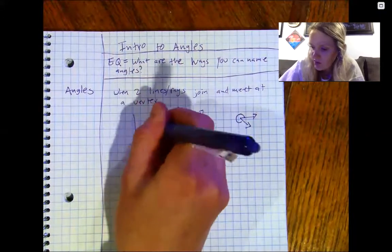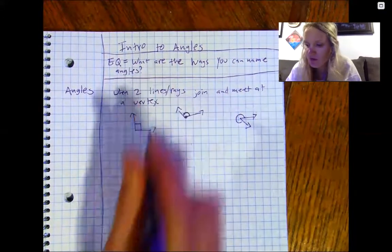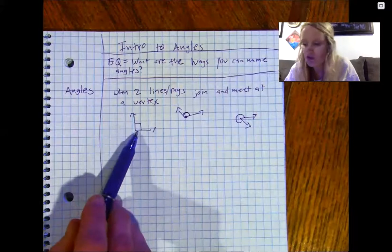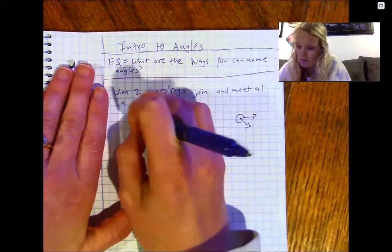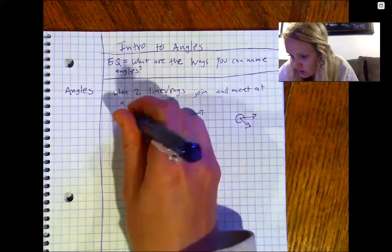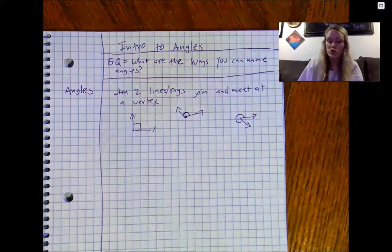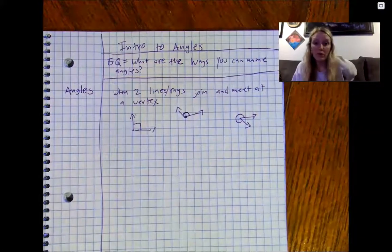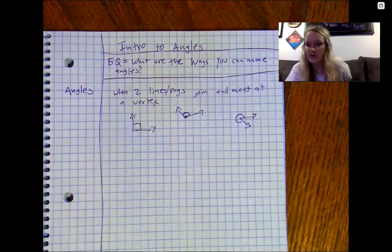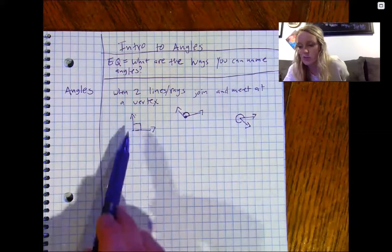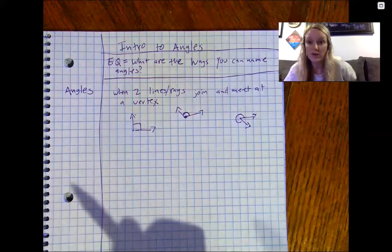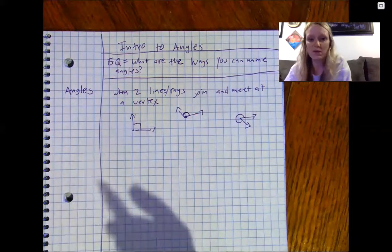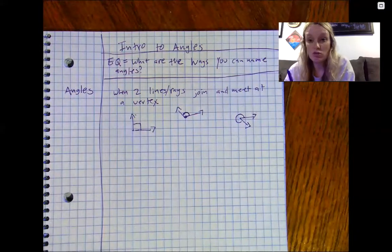Another way we show it — some of you have seen this before — that little square shows it's a 90-degree angle, a straight up and down 90-degree angle. When we talk about angles, it's the spot in between — not around it, but in between the two rays or line segments.